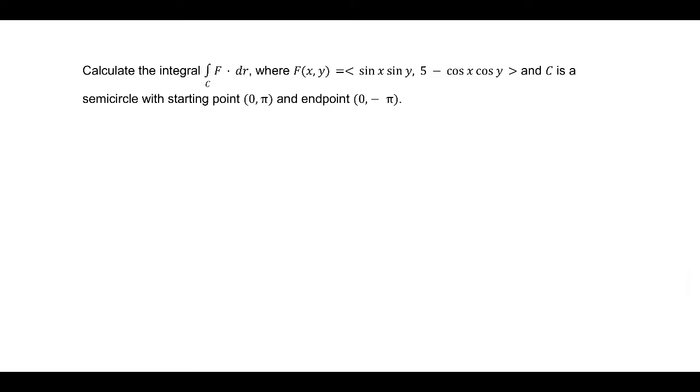Calculate the integral along the curve C of F dotted with dr, where F(x,y) equals ⟨sin x sin y, 5 - cos x cos y⟩, and C is a semicircle with starting point (0,π) and endpoint (0,-π).